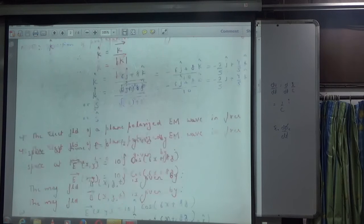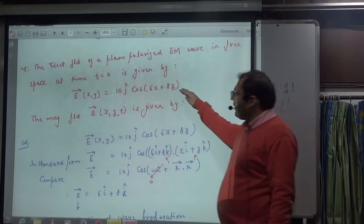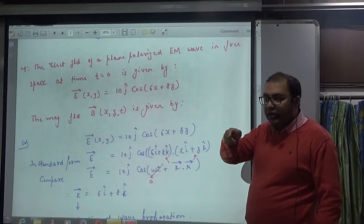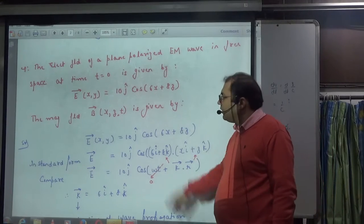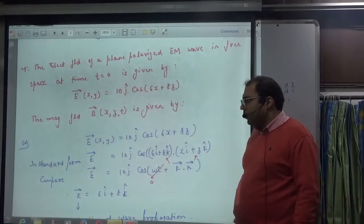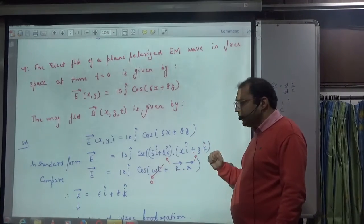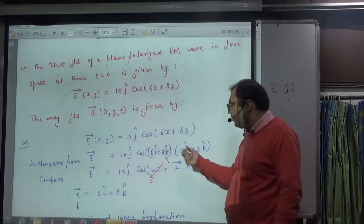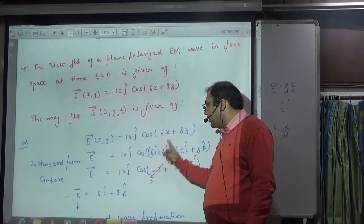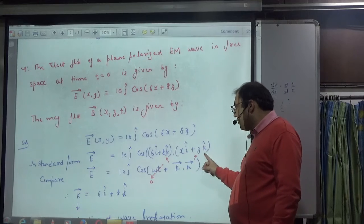This is a new type of equation you need to understand — how to extract k-vector and k-cap, because k-cap gives the direction of wave propagation. If E-vector is given in this form with omega-t removed, you need to convert it to standard form. It will be made by the dot product of (6i-cap + 8k-cap) with (x·i-cap + z·k-cap).